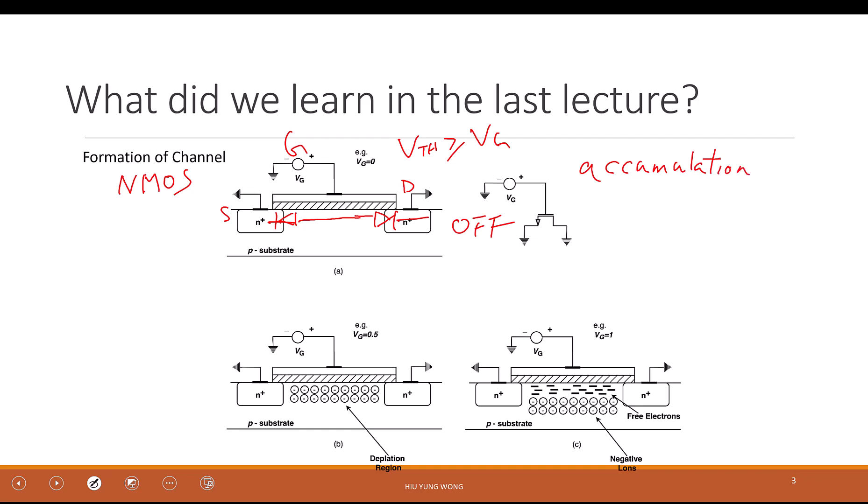The reason we call it accumulation is because the body, well this is the major part of the transistor, is P-type. When we have a very negative bias, we attract all the holes there. So it accumulates the holes. We start increasing the gate bias.